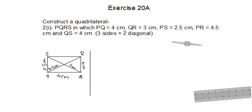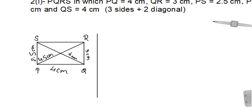Looking at the rough figure, we have PQ = 4 cm, QR = 3 cm. The length SR is not given, so we won't draw it directly — but in the process of drawing, we will locate points S and R. Just join them to complete the figure. SP = 2.5 cm, diagonal PR = 4.5 cm, and diagonal QS = 4 cm.